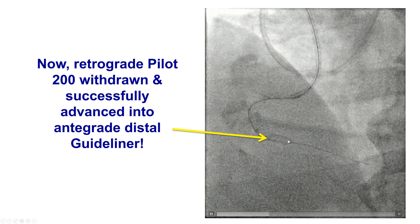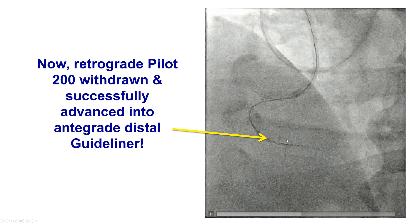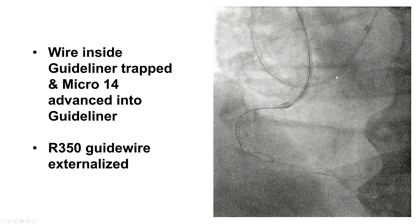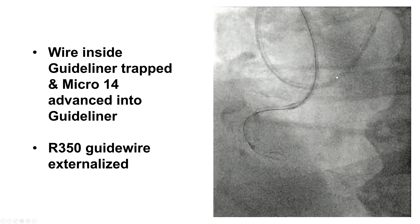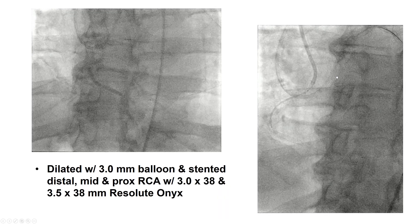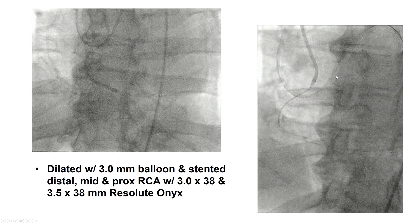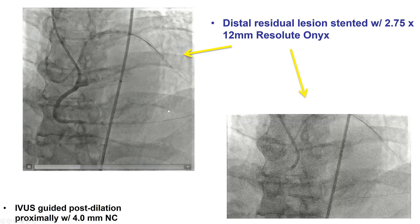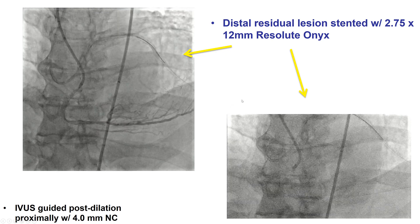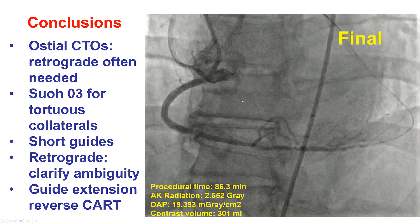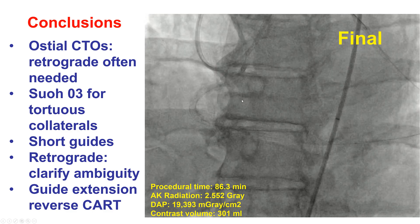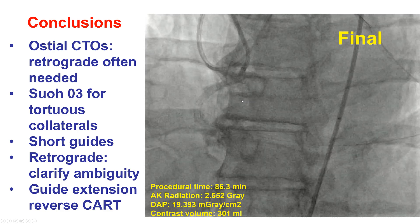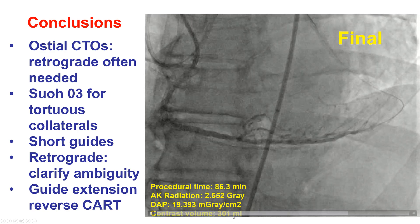After doing that, we were able to advance a retrograde Pilot 200 all the way into the antegrade GuideLiner. This was trapped and then externalized with an R350 guidewire, dilated, and multiple drug-eluting stents were placed all the way to the right coronary artery ostium, with some residual disease distally covered by another drug-eluting stent using intravascular ultrasound guidance. A nice result was achieved with TIMI-3 flow in the large right coronary artery, 2.5 Gray radiation dose, and 300 mL of contrast.